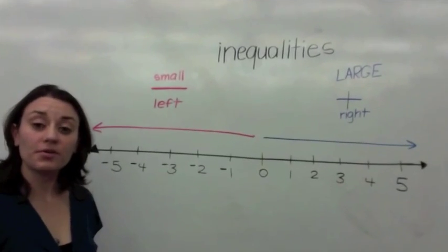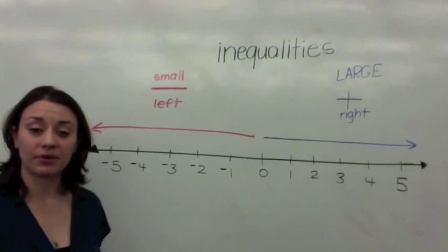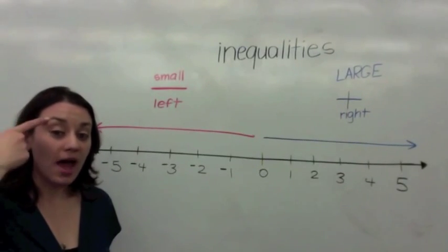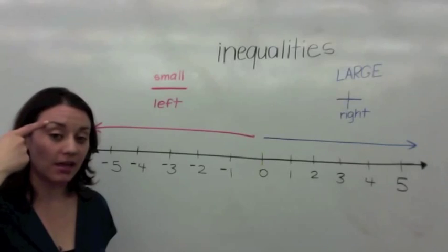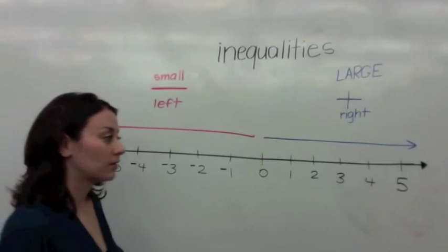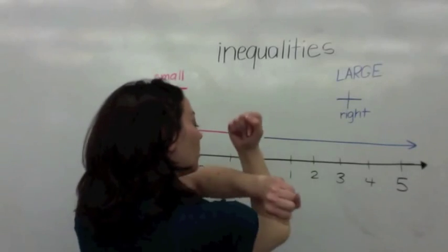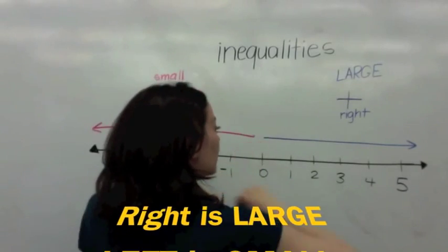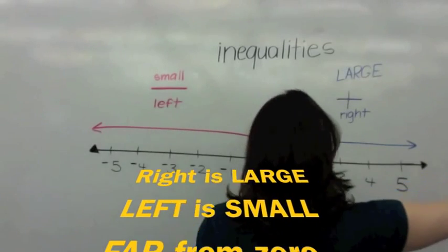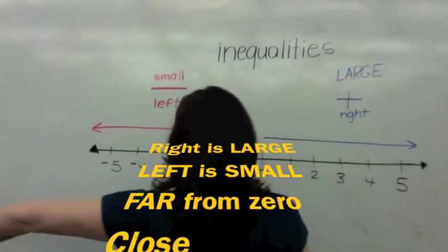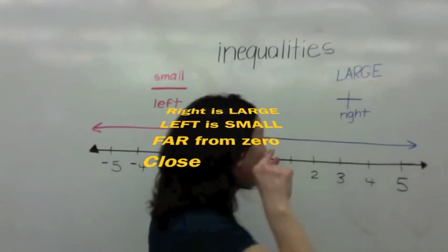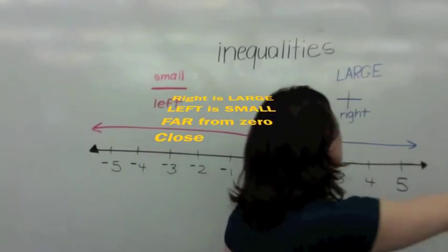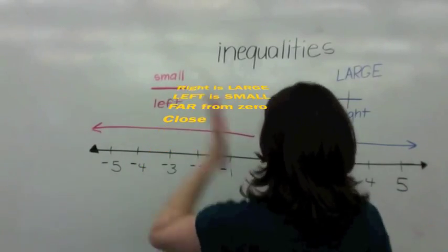So, when you compare numbers, you have to remember this saying: Right is large. Left is small. Far from 0. Close.